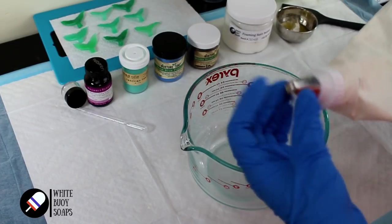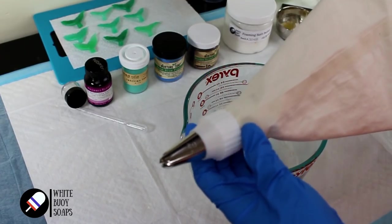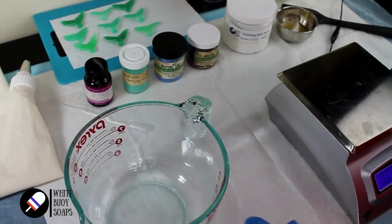And of course we have my big piping bag here with a Wilton 2D on it, and I do have my coupler in. This will create a ruffled effect. Let's go. I'm gonna pull my scale in, we're gonna measure out 500 grams of the foaming bath butter base.